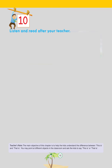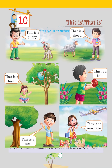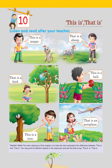Chapter 10: This is / That is. Listen and read after your teacher: This is a puppy. That is a sheep. That is a bird. This is a ball. This is a tree. That is an aeroplane. Teacher's note: The main objective of this chapter is to help kids understand the difference between 'this is' and 'that is.' Point at different objects in the classroom and ask kids to say 'this is' or 'that is.'